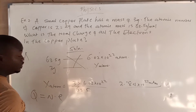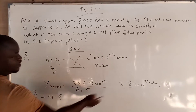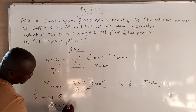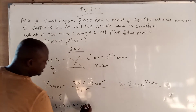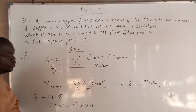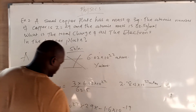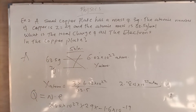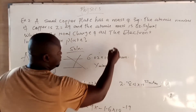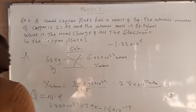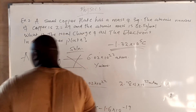So we have 29 electrons per atom. The number of atoms we calculated is 2.84 times 10 raised to the power of 22. Multiplying by 29 electrons, and each electron carries minus 1.6 times 10 raised to the power of minus 19 coulombs, tying it all together, the answer is minus 1.32 times 10 raised to the power of 5 coulombs.